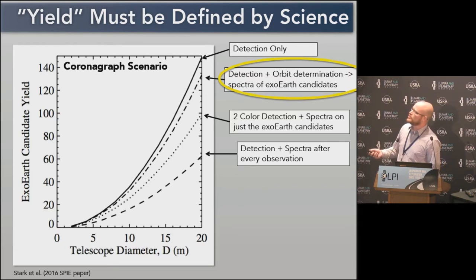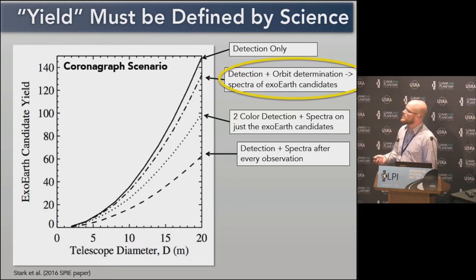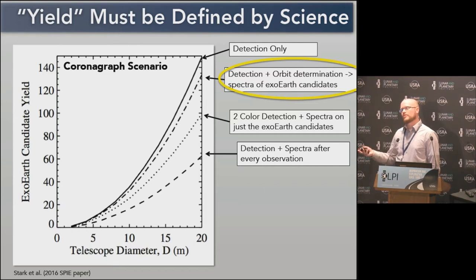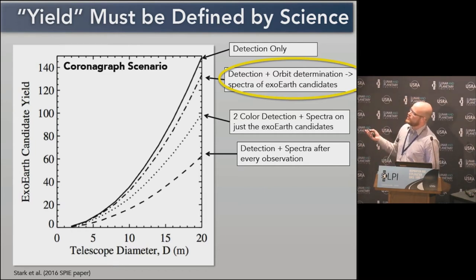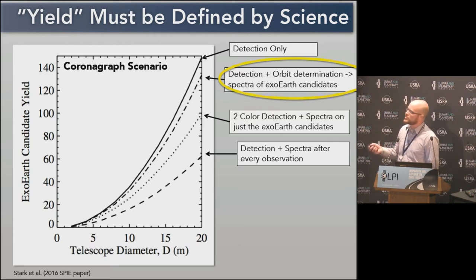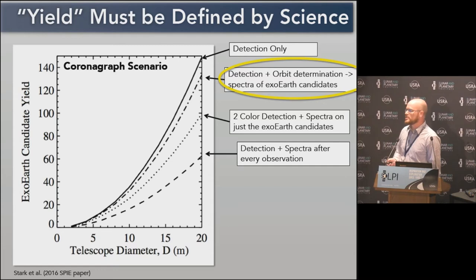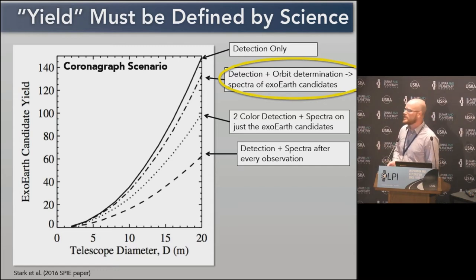With a coronagraph you'd choose specific systems for spectral characterization, so you're going to get lots of multi-epoch color and lots of orbit measurements, but fewer spectra. With a starshade, you're going to get more spectra but very few orbit determinations and very few multi-epoch imaging.